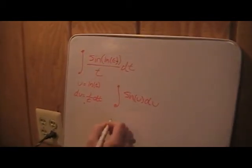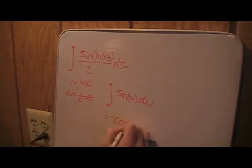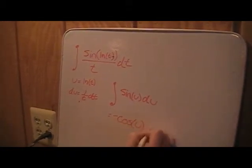Sine is negative cosine, so we get the negative cosine of u plus c.